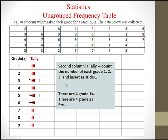The second column is tally. Here you count the number of each grade. How many grade ones? Count them: four — insert four sticks. How many grade twos? Also four sticks. Grade threes: six of them. Grade fours: four. Grade fives: six. Grade sixes: five. Grade sevens: three. Grade eights: three. Grade nines: three.